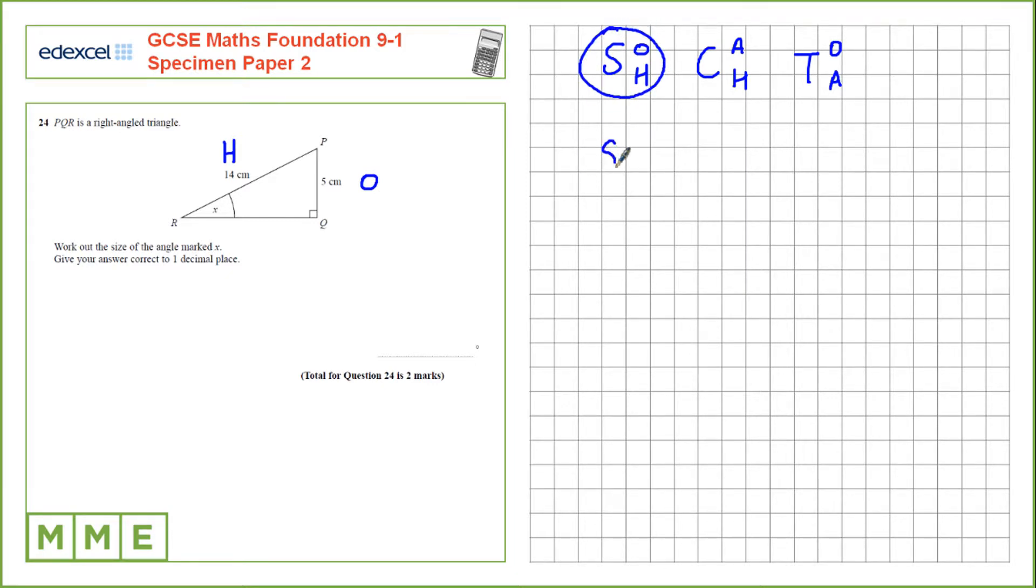Let's write out the sine ratio. So sine of the angle, which in this case is x, so sine x is opposite 5 over 14.